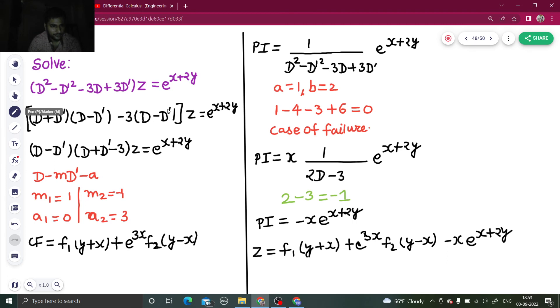First step to factorize and then compare each factor with d minus md dash minus a. Find the complementary function which is f1 y plus e power x f1 y plus mx depending on whatever the value of m and a is. Write the complementary function.